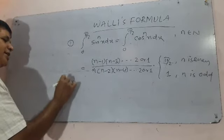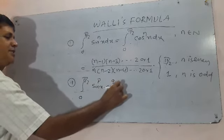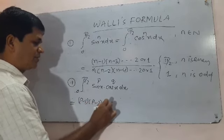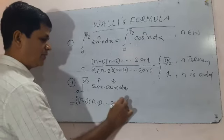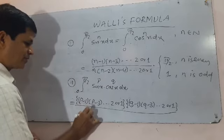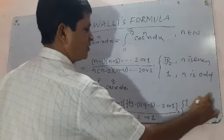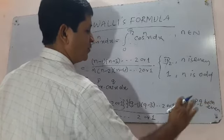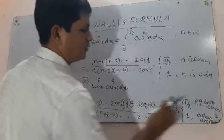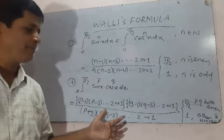The second Wallis formula is: the integral from 0 to π/2 of sin^p(x) × cos^q(x) dx equals [(p-1)(p-3)…2 or 1] × [(q-1)(q-3)…2 or 1] divided by [(p+q)(p+q-2)…2 or 1], multiplied by π/2 if both p and q are even, and multiplied by 1 otherwise.